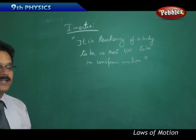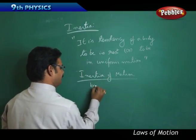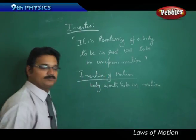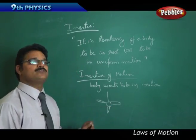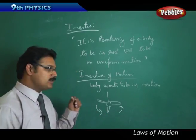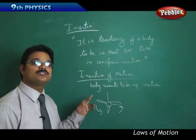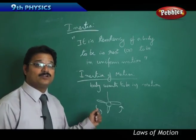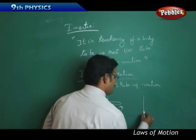The second type is inertia of motion, which means the body wants to stay in motion. Take the example of a fan. When you switch on the fan, electricity passes to the blades and they start rotating. When you switch off the fan, electricity stops but the blades do not stop immediately — they keep moving because they are in motion and want to remain in motion. It takes some time for them to stop. This is an example of inertia of motion.